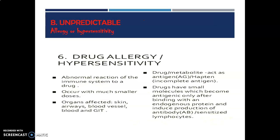Unpredictable ADR includes allergy or hypersensitivity. Drug allergy or hypersensitivity is an abnormal reaction of the immune system to a drug, occurring with much smaller doses. Organs affected include the skin, airways, blood vessels, blood, and GIT. Drug metabolites act as antigens; drugs are small molecules that become antigenic only after binding with endogenous proteins, inducing the production of antibodies by sensitized lymphocytes.